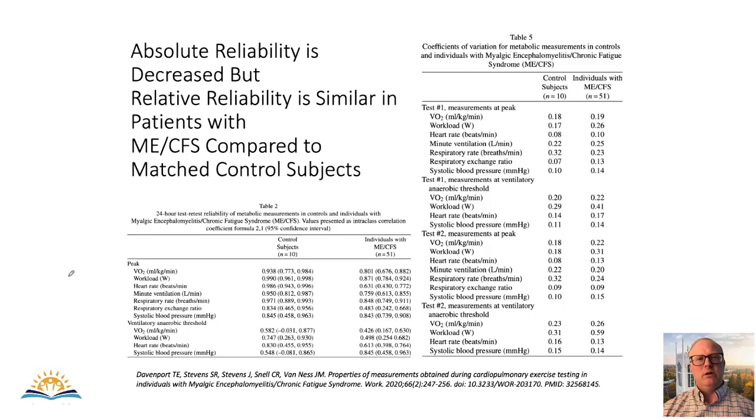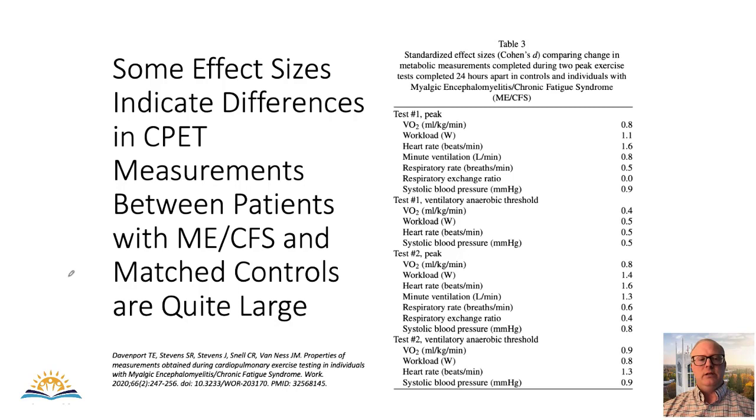We use cardiopulmonary exercise testing to detect small changes in status between days for a whole host of different populations. People with these conditions can reproduce an exercise test within about 8% of their values. So really failure to reproduce a maximal test is unusual. We expect people to get on the bike two days in a row and do basically the same. And in fact, maybe even do a little bit better on the second day because they've been through the test once, they know what it's like, and they have some biomechanical efficiencies that maybe they've picked up.